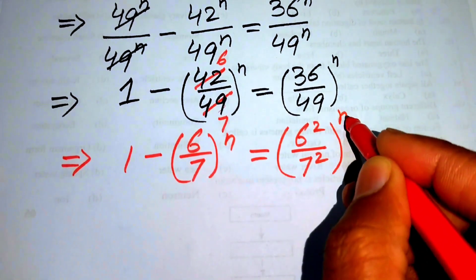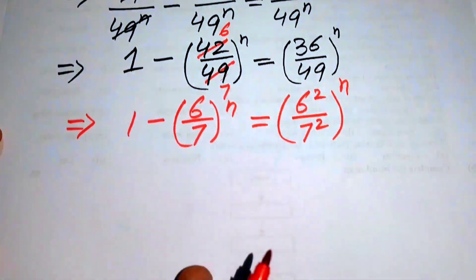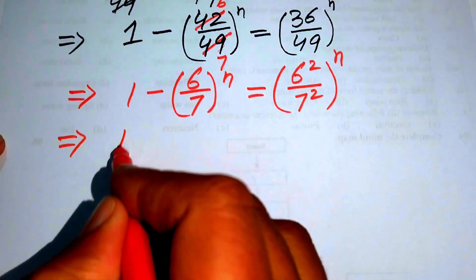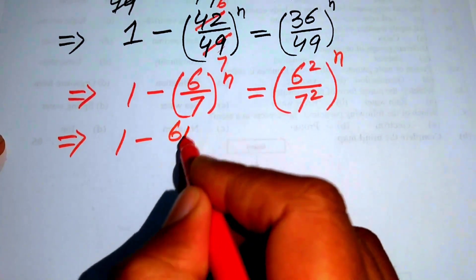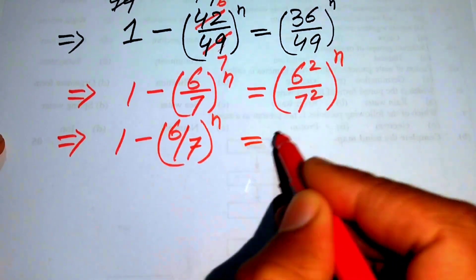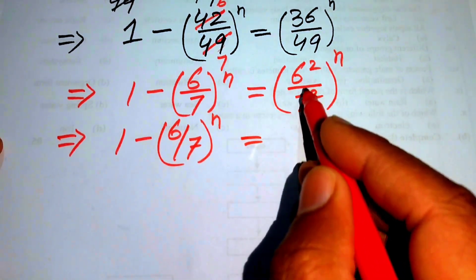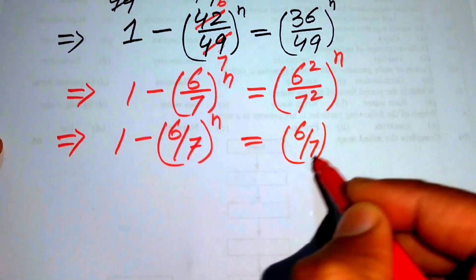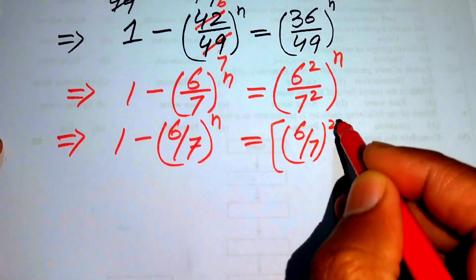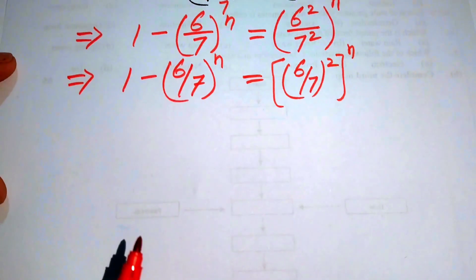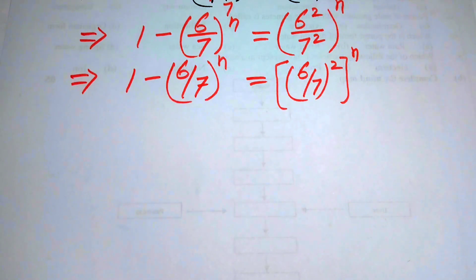After further simplification, the left side is 1 minus (6/7)^n. On the right side, we combine the exponents and write it as (6/7)² raised to the power of n, which is (6/7)^(2n).